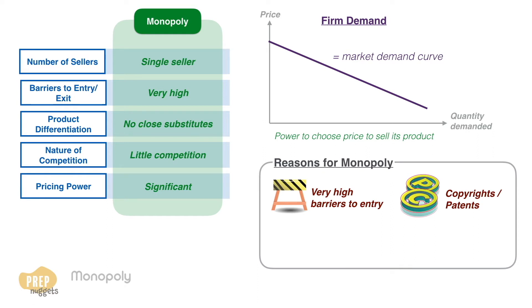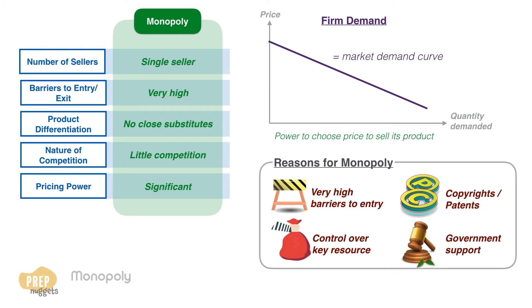Another possible source of monopoly power is control over a resource specifically needed to produce the product. Most frequently, monopoly power is supported by government due to economies of scale. We call these natural monopolies, which we'll discuss at the end of this lesson.